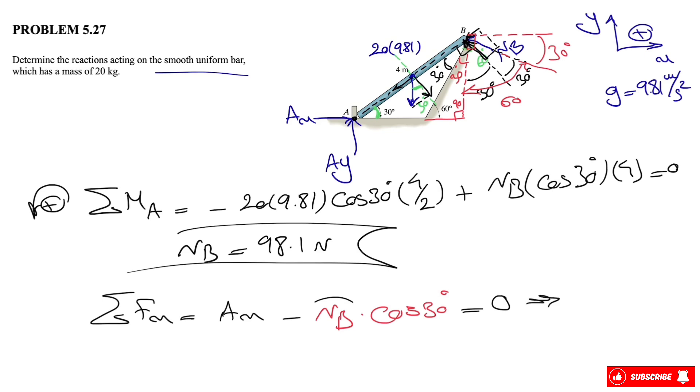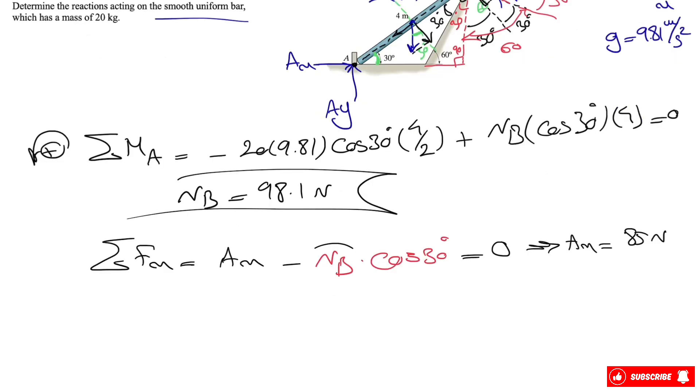And last one, we'll do our Fy, and simply have Ay minus the weight, which is 20 times 9.81, and we have the y component of NB, which will be NB times, this time, sine of 30 degrees.